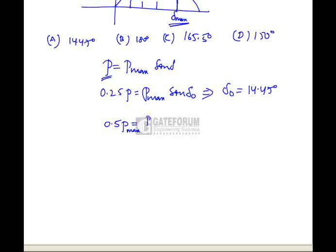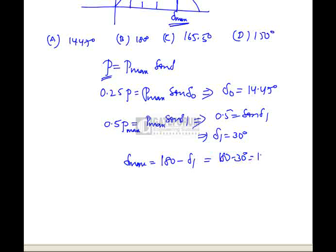So 0.5P max equals P m sine delta 1, which is also equal to P max equals 0.5 sine delta 1. From this, delta 1 equals 30 degrees. Now delta max is given as 180 minus delta 1, which equals 180 minus 30 degrees. That is 150 degrees is the answer. Option D is correct.